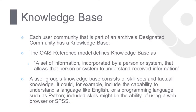Each user community that is part of an archive's designated community has a knowledge base. The OAIS reference model defines knowledge base as a set of information incorporated by a person or system that allows that person or system to understand received information. A user group's knowledge base consists of skill sets and factual knowledge — it could, for example, include the capability to understand a language like English or a programming language such as Python. Included skills might also be the ability to use a web browser or software such as SPSS. From the perspective of the archive, the knowledge base is the baseline needed to determine which support and additional information must be provided for the designated community to be able to use and understand the data.